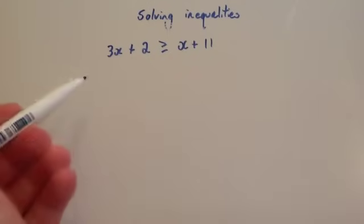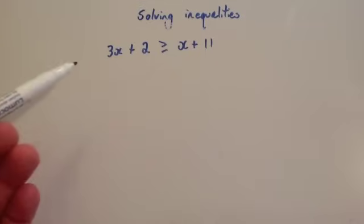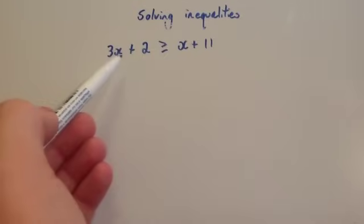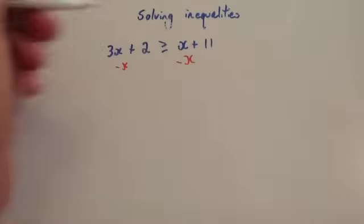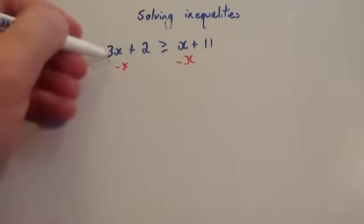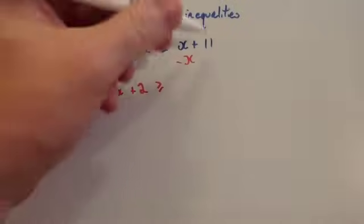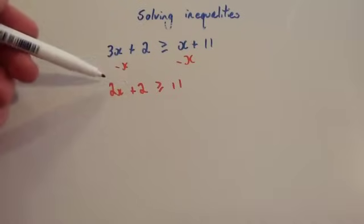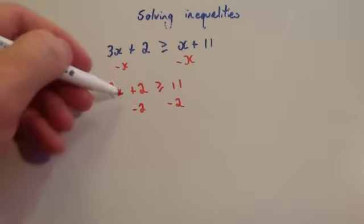Okay, so here we've got 3x plus 2 is bigger than or equal to x plus 11. Whenever you're solving an inequality, you solve it exactly the same way as an equation, except being careful if you multiply or divide by a negative. We don't want x's on both sides, so we want to get rid of the lowest one — take away x from both sides. That gives you 2x plus 2 is bigger than or equal to 11. Then take away 2 from both sides, which leaves you with 2x.